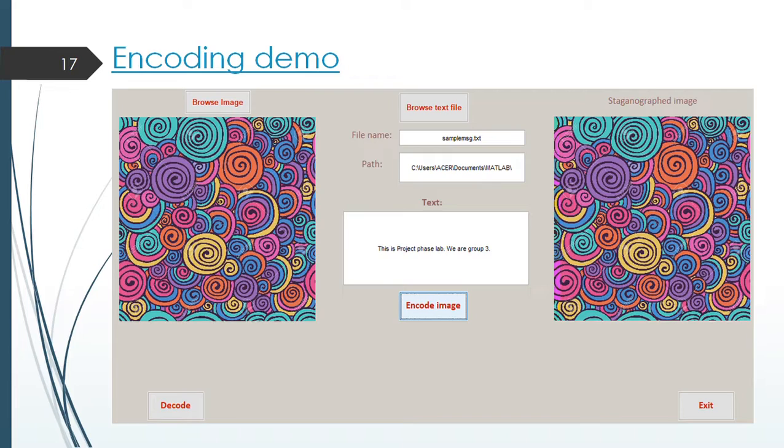This is a screenshot from our encryption application where on the left hand side there is an image. In the middle we have got the message which reads like this: This is project phase lab we are group 3. This message is encrypted inside the left hand side image and we got the result on the right hand side image.